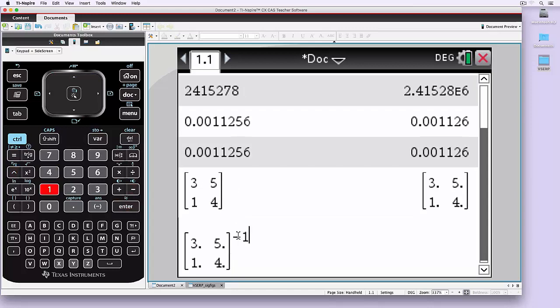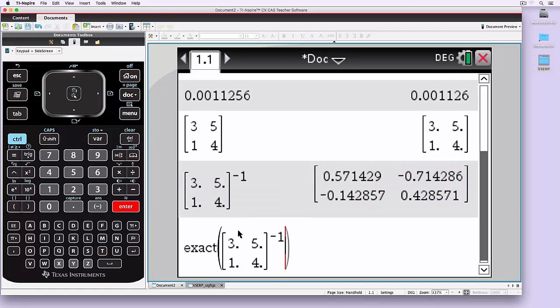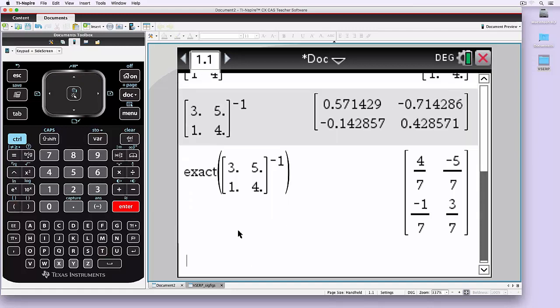You can see that the result there isn't particularly helpful as a fraction. You can use extra commands like the adapt command, which allow you to force it to give a fraction, and you'll see the result there may be more satisfactory for an exam question.